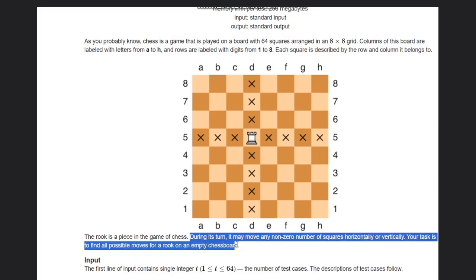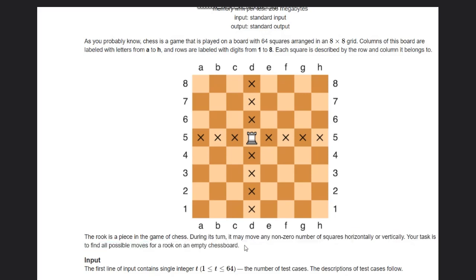Your task is to find all possible moves for a rook on an empty chessboard. So if a rook is placed here, it can move in this column or in this row. If a rook is placed at a point, we need to know all the possible moves it can have.